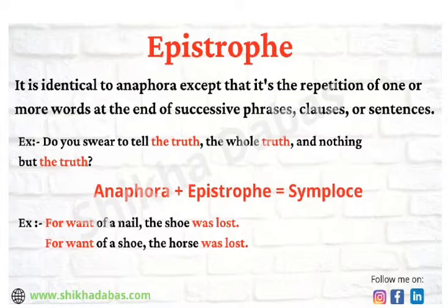Next we have symploce, which is a mixture of both anaphora and epistrophe. The example is: 'For want of a nail the shoe was lost, for want of a shoe the horse was lost.' You see 'for want' and 'was lost' are being repeated at the beginning and at the end of each sentence, so 'for want' and 'was lost' together form the symploce.